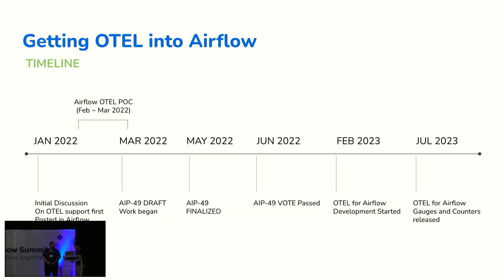In May, AIP-49 was finalized and submitted. In June, the voting process began. There's no definite timeline on when to start the vote — whenever you feel ready, you declare on community forums that the AIP is mature and you want to push forward. Voting usually takes about a week, where community members can reply and vote. We got some very significant, positive votes. The vote passed — the AIP proposal passed — and we were ready to rock and roll.